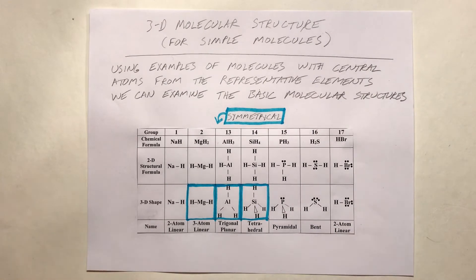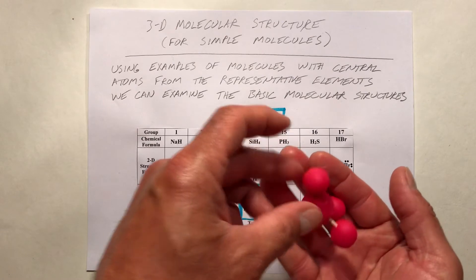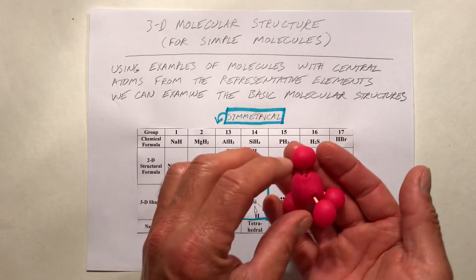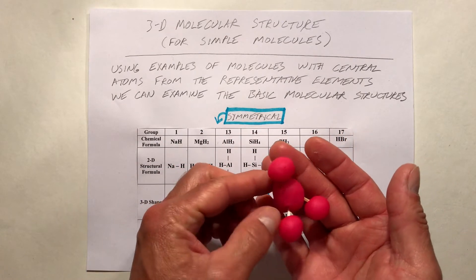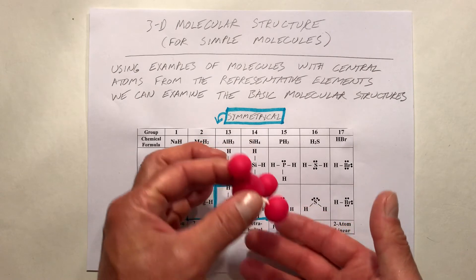Let's take a look at a model of the tetrahedral structure. This is a ball-and-stick model of a tetrahedral structure.